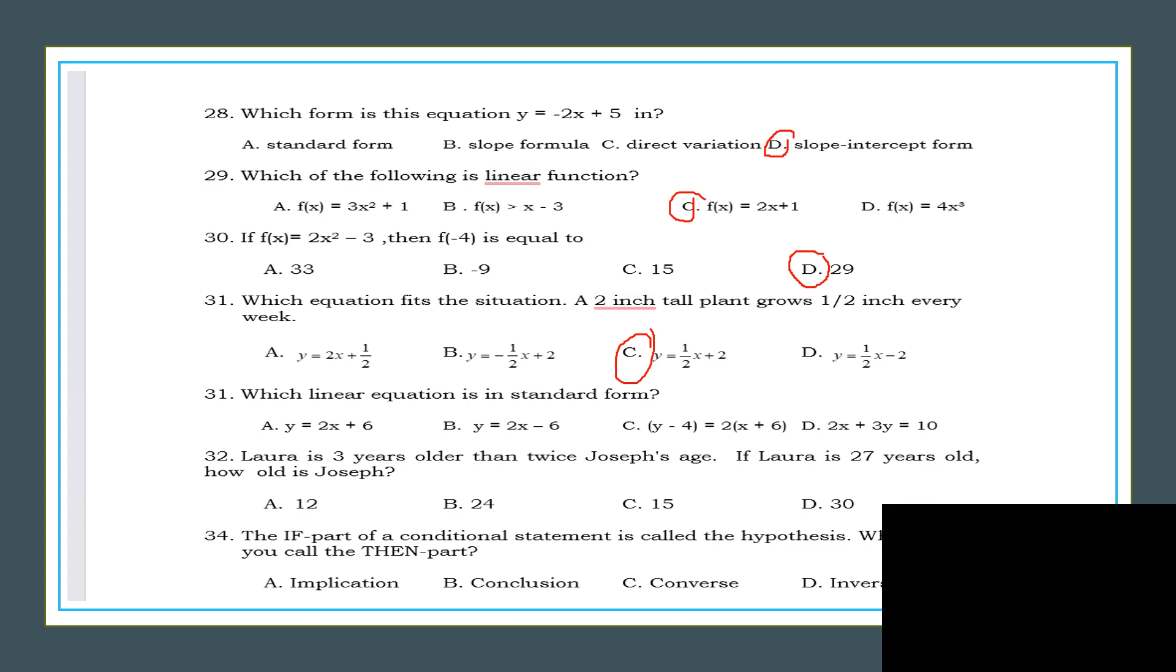Number 32. Which linear equation is in standard form? So by just looking at it, the answer is D. Number 33. Laura is three years older than twice Joseph's age. If Laura is 37 years old, how old is Joseph? Okay, just think of the way. So three years older, if Laura is 27 years old now, of course Joseph's age is 12.